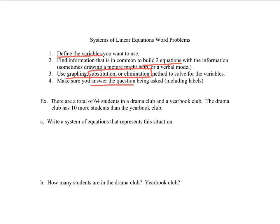Let's look at an example. There are a total of 64 students in a drama club and a yearbook club. The drama club has 10 more students than the yearbook club. And then part A wants us to first write a system of equations that represent the situation. So we have two things going on. And we've got a drama club and a yearbook club. So you can use X and Y, but I'm going to make it more relatable to the story. And I'm going to say that D is going to represent the number of students in drama.